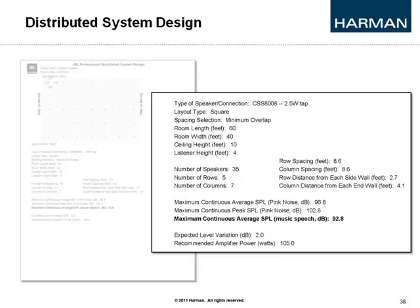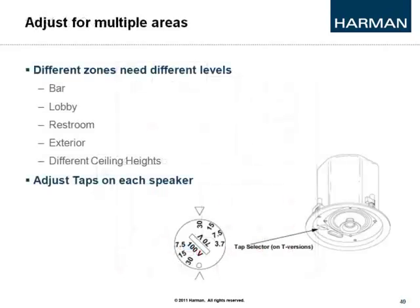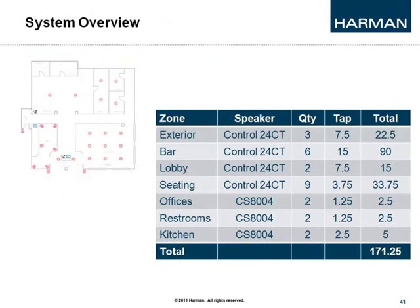Knowing I need 105 watts based on the number of speakers tapped at 2.5 watts, I can now put the full system design into practice. I broke each rectangular zone in the facility through the design tool. Different zones need different levels — the bar is one level, the lobby is another, the restroom is another — and each has different ceiling heights. You adjust this by changing the taps on each speaker, which changes where the signal comes off the transformer, similar to choosing between a 15-watt, 30-watt, 60-watt, or 100-watt light bulb.